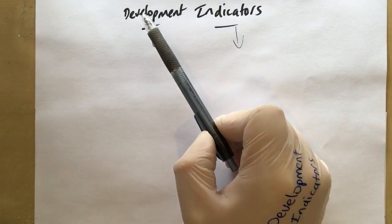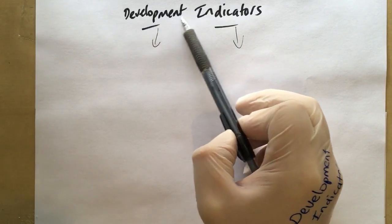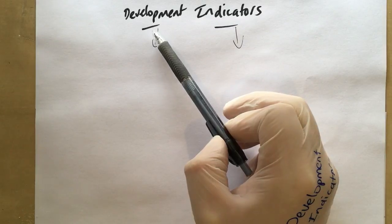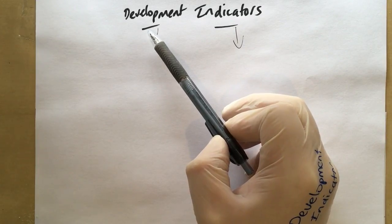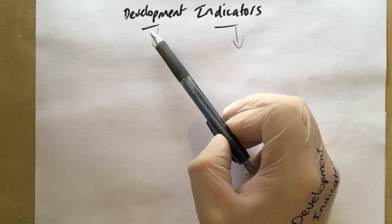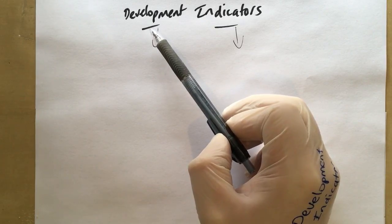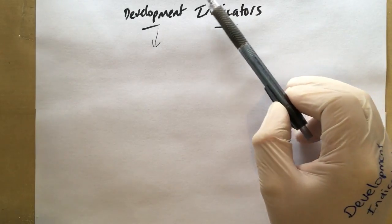In geography, the word 'development' shows you how well developed a country is in different ways. In previous videos we've talked about the physical aspects of a country, the social aspects, and the economic aspects.